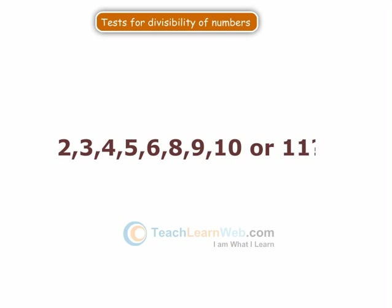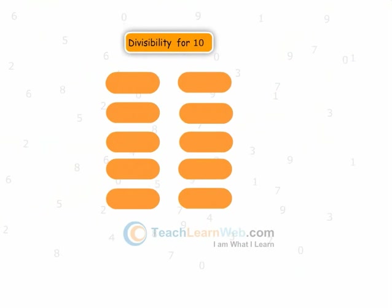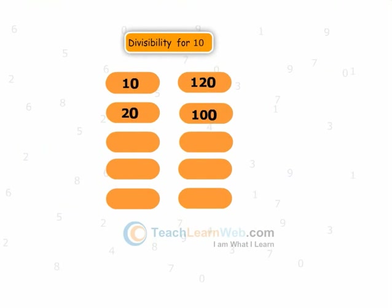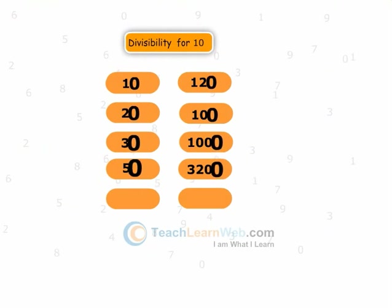Let us start with divisibility by 10. All the above numbers are divisible by 10. Any number ending with the digit 0 is divisible by 10.